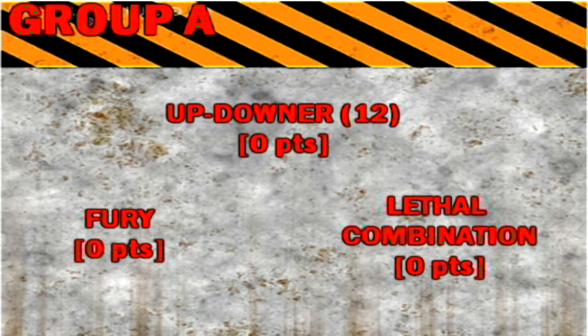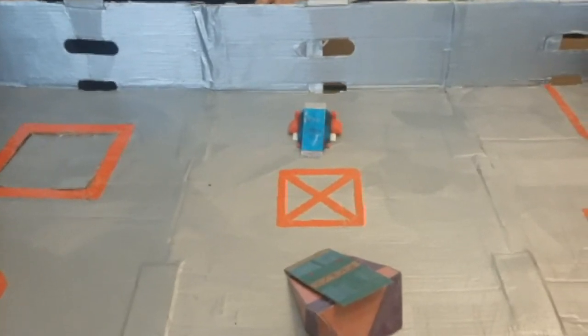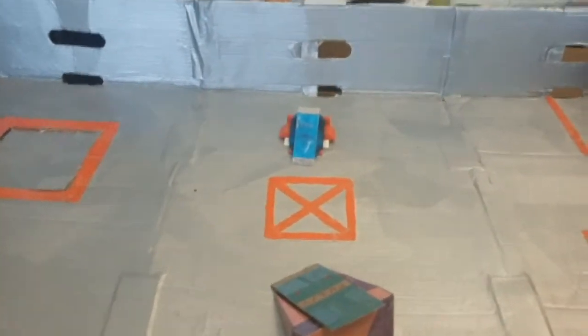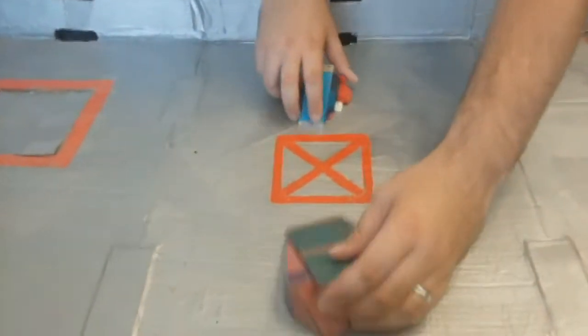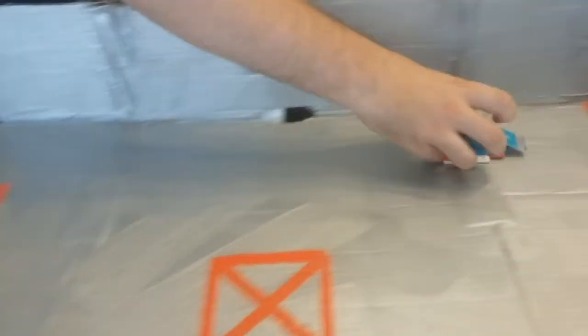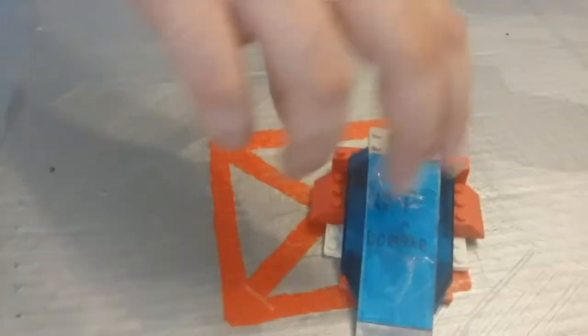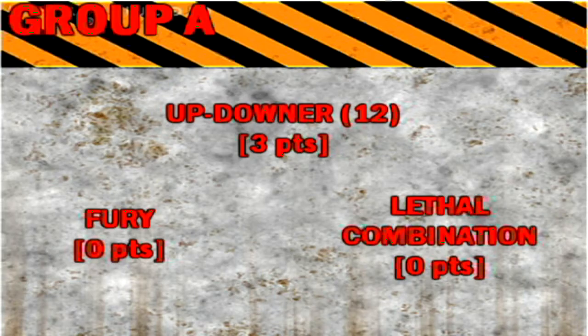Up Downer versus Fury is the first battle of the night. Robot ears, stand by. Three, two, one. Activate. This should be a flipping fantastic battle. A good fit there immediately by Fury. They've already gone. And Up Downer. Well, there was no question about that. Up Downer, they get the three points. Fury are on nothing.